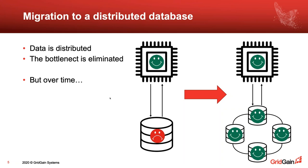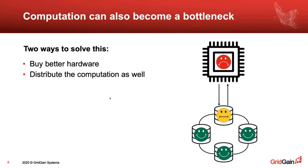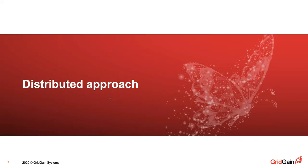This is a pretty common scenario where increased load causes the database to slow down. A natural solution is to move from a single database to a distributed system — a distributed database. But sometimes people just store the data in a distributed manner and still request it from that database, which solves some performance issues. However, as requests increase, the computational power eventually becomes a bottleneck.